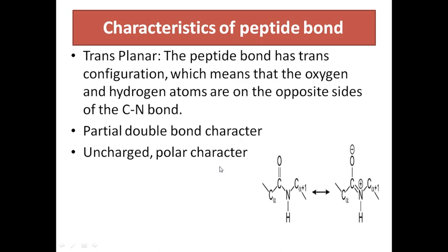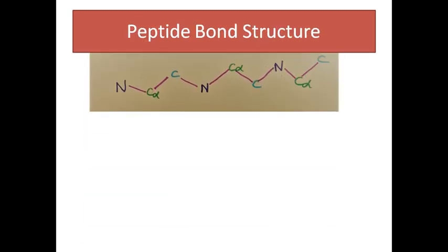The peptide bond is uncharged and polar in character. How to write this peptide bond structure? You can represent the peptide bond with a zigzag line. First, draw a zigzag line to represent the main chain or backbone of the protein. The main chain or backbone is represented as a zigzag. Always the amino terminal end will be on the left hand side and the carboxyl COO group should be on the right hand side.